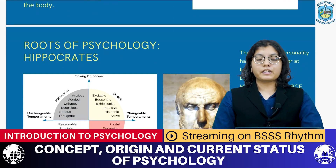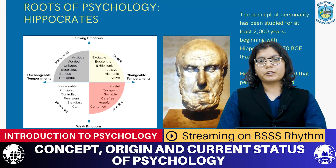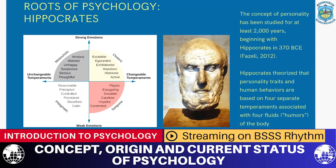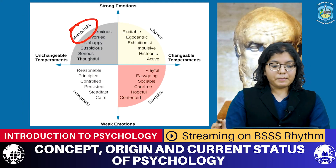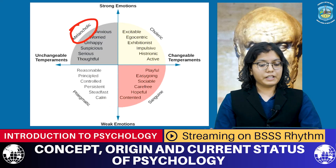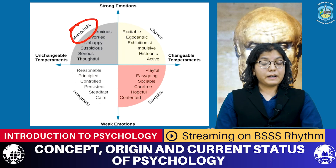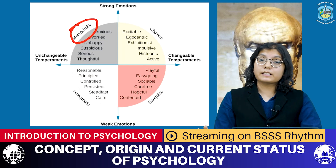Now we come to Hippocrates. He is usually more known in the field of medicine — doctors take the Hippocratic oath when they don their coat for the first time. But Hippocrates also made significant contributions to psychology. He was one of the first people to theorize personality traits under four categories. The first is melancholic: people who are melancholic tend to be anxious, worry often, and show depressive symptoms such as hopelessness and unhappiness — but they also tend to be serious and thoughtful.